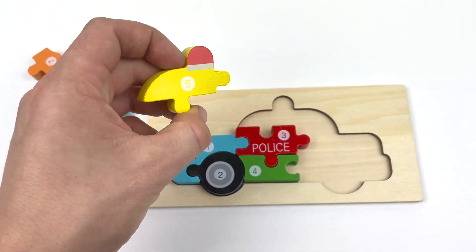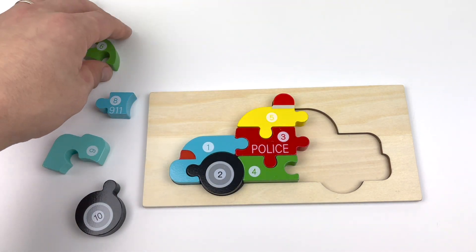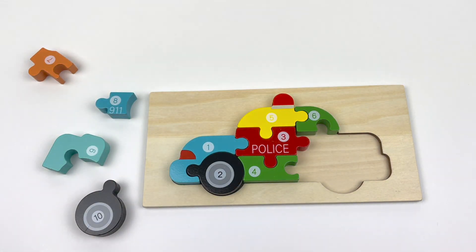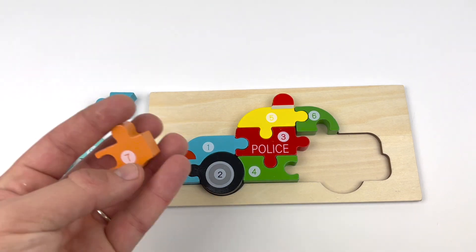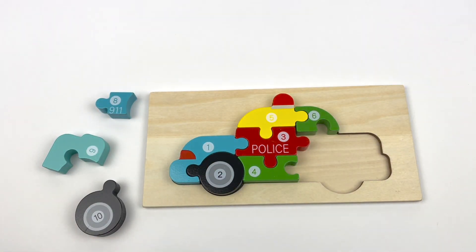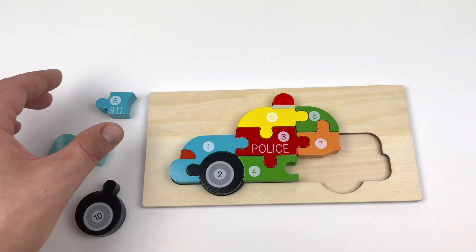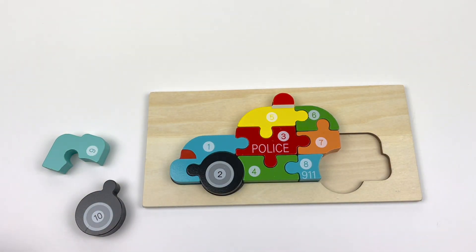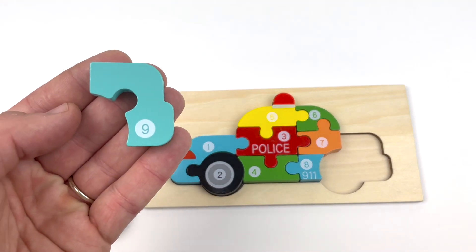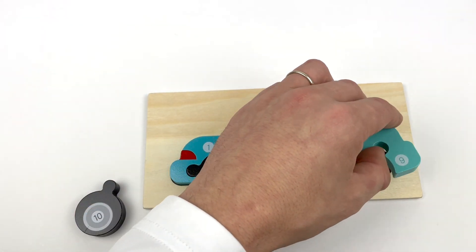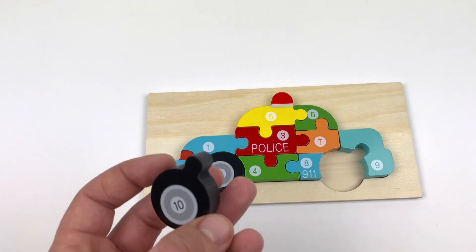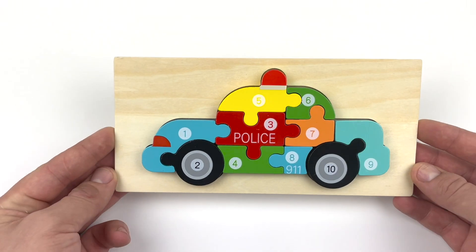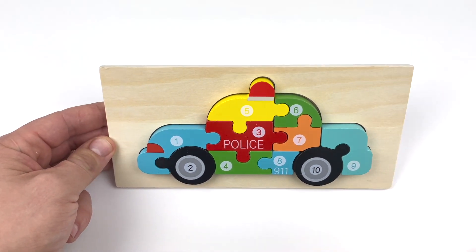Five. Yellow. And some red on top. Six. Green. Seven. Eight. Blue. Nine. Light blue. Oops. There you go. And our last piece. Number ten. It's our second black wheel. Do you know what this is? That's right. A police car.